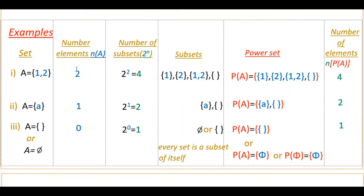The subsets are the set itself — one subset — and the empty set, which is a subset for every set. So you can write those two subsets first. Then {1} is one subset and {2} is one more subset, giving a total of four subsets. If you write these four subsets inside the braces, you get the power set of A. The number of elements of this power set is 4, which equals the number of subsets.